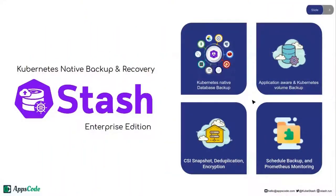Introduction to Stash. Stash is a cloud-native data backup and recovery tool for Kubernetes. Using Stash, you can backup Kubernetes workloads, volumes, and databases. Stash integrates with the Kubernetes CSI driver that provides CSI snapshots. In Kubernetes, you have to create a snapshot for each PVC, so if your application has multiple volumes you will have to create multiple snapshots. Stash automates these things — you just need to target the workload in Stash and it will automatically take backup of all the volumes for the workload.